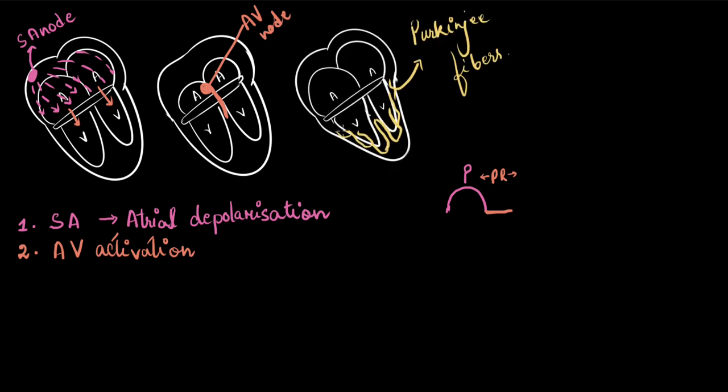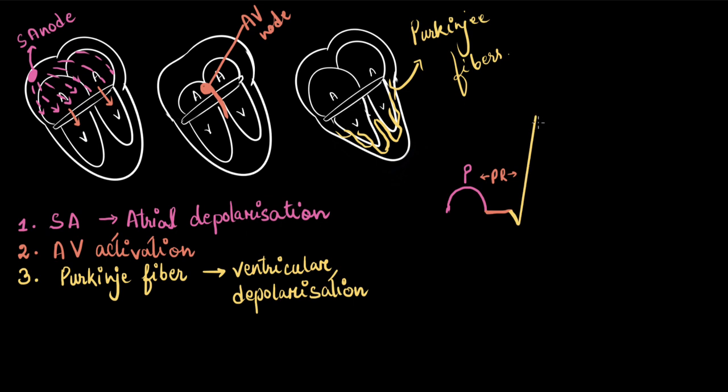The next cardiac event is the activation of the Purkinje fibers which leads to the contraction of the ventricles. So, the third point will be Purkinje fiber activation and ventricular depolarization. Contraction is also called depolarization. And this event is shown by the electrocardiograph as a very high peak. It goes down first, up, and then down, and up again. It is called the QRS complex.